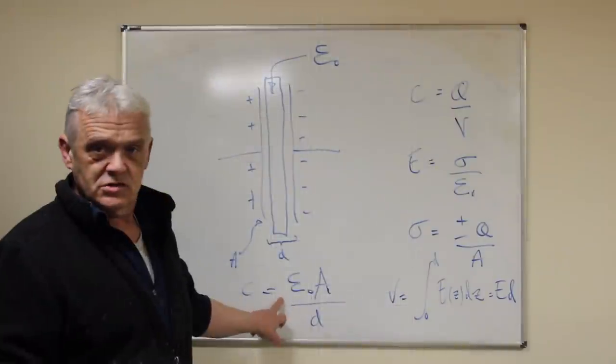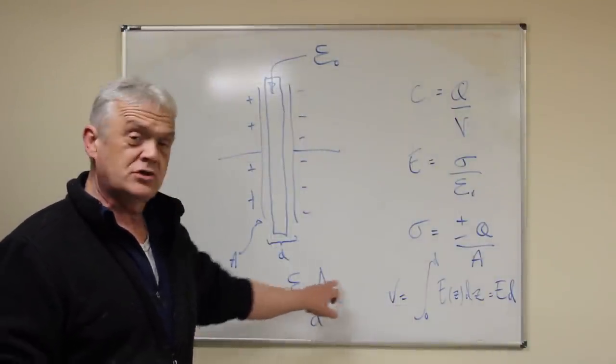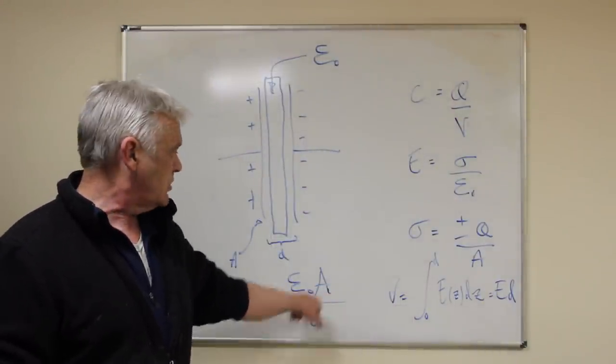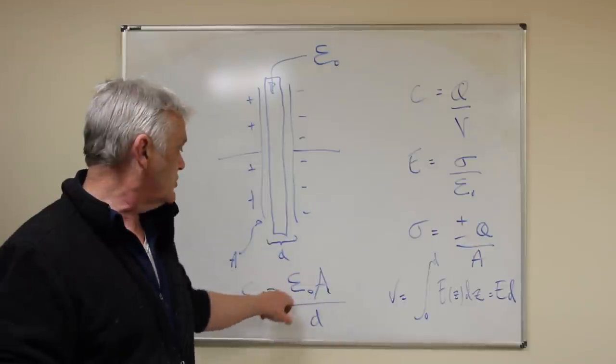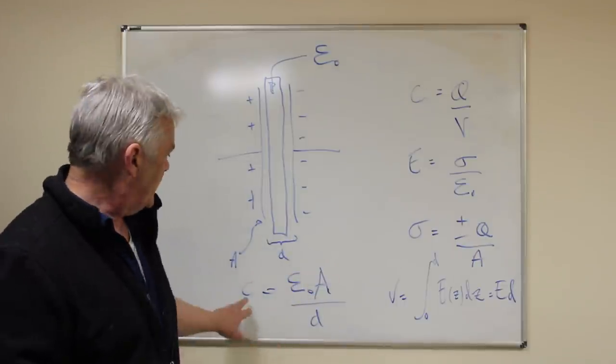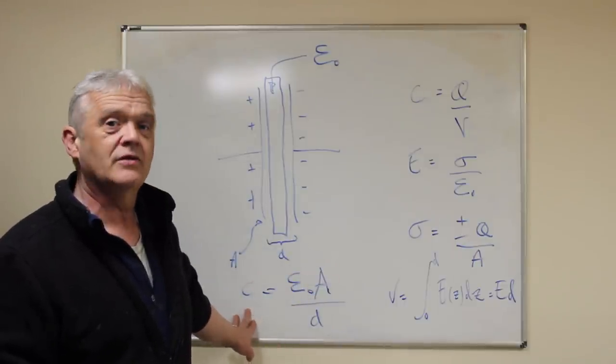So we can change that, and you find companies working on each of these: trying to make it as thin as possible, trying to make the biggest surface area, or trying to get the highest permittivity, because they want that to be the highest value possible.